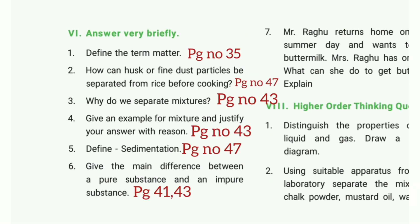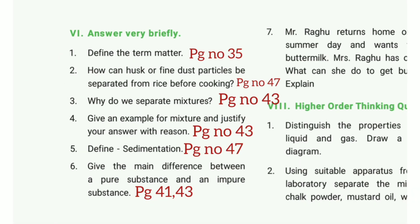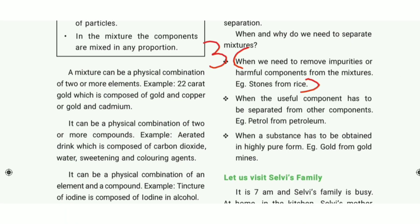Second question: how can husk or fine dust particles be separated from rice before cooking? Take page number 47 under the sedimentation heading. Lighter impurities can be removed by winnowing. We need to remove impurities or harmful components from the mixture — example: stones from rice.